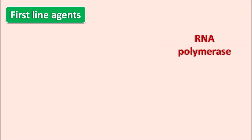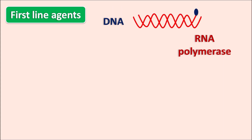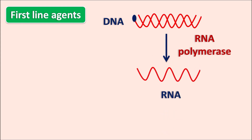A few drugs act on the RNA polymerase enzyme within the mycobacteria. This RNA polymerase acts on DNA to prepare a copy of RNA. By the action of DNA-dependent RNA polymerase, RNA is synthesized within the mycobacteria. Rifampin inhibits DNA-dependent RNA polymerase, thereby inhibiting transcription. When RNA is not synthesized, proteins are also not synthesized, so rifampin inhibits both transcription and translation.